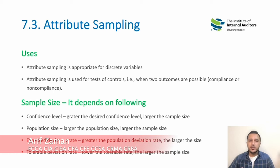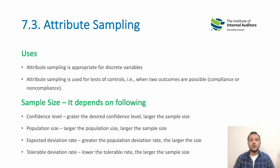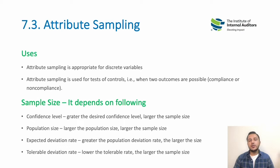We have two types of sampling: attribute sampling and variable sampling. Attribute sampling is focused on assessing the characteristic of a control — what we call the design of a control or test of controls. It deals with discrete variables, meaning we are looking for either compliance or non-compliance of a control, and it specifically pertains to the design of the control.